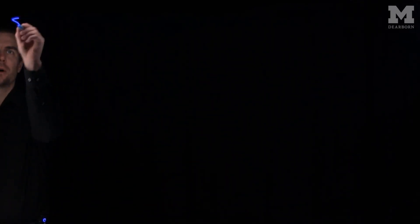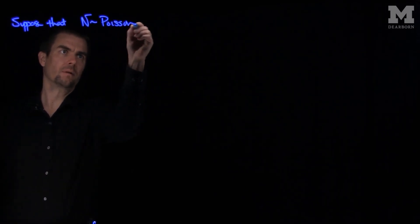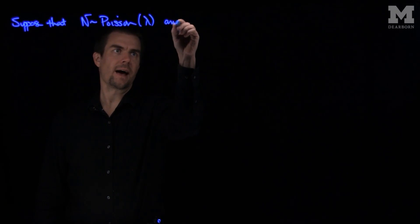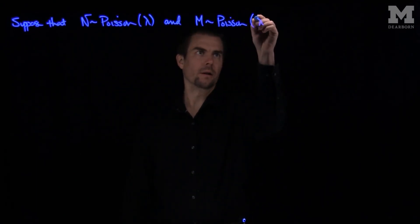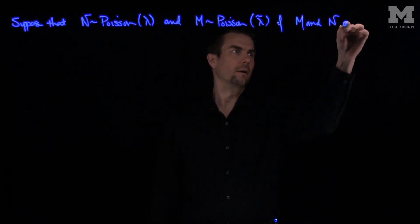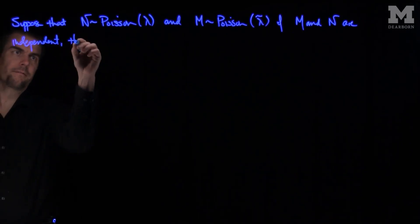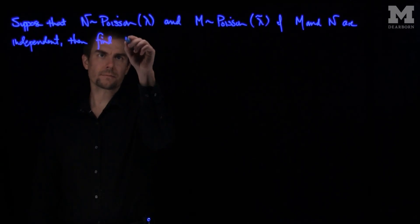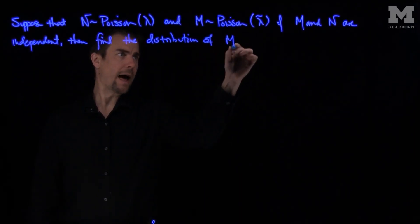Hello students. In this video we'll find the distribution of the sum of two independent Poisson random variables. Let's suppose that n is a Poisson random variable with parameter lambda, and m is a Poisson random variable with parameter lambda tilde. If m and n are independent, then find the distribution of m plus n.